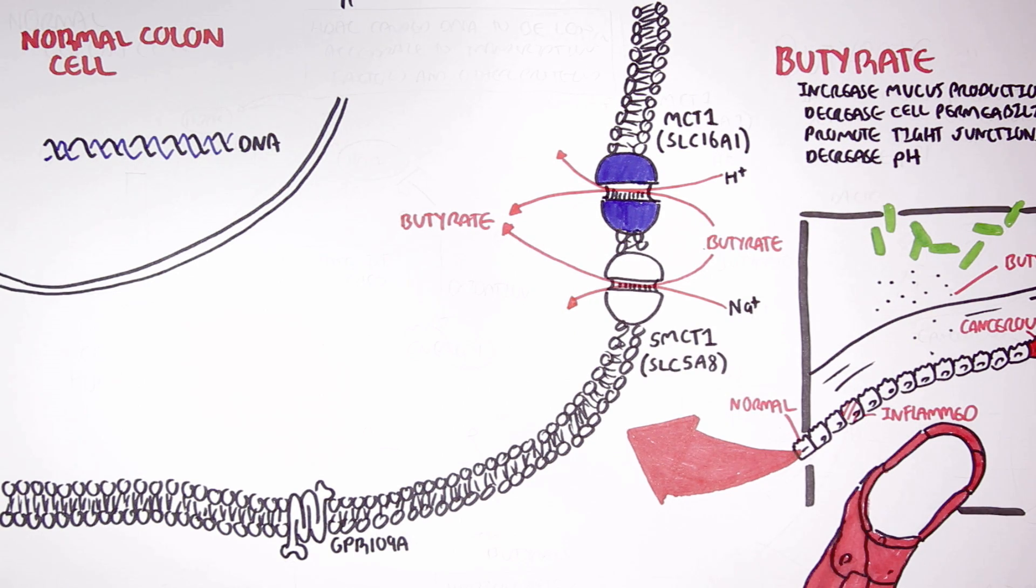Now if there was a lot of butyrate being absorbed by the colon cell, this may result in a lot of sodium being absorbed thanks to the SMCT1 transport. And if a lot of sodium is absorbed, water tends to follow, and because of this property, butyrate is considered as an anti-diarrheal agent.